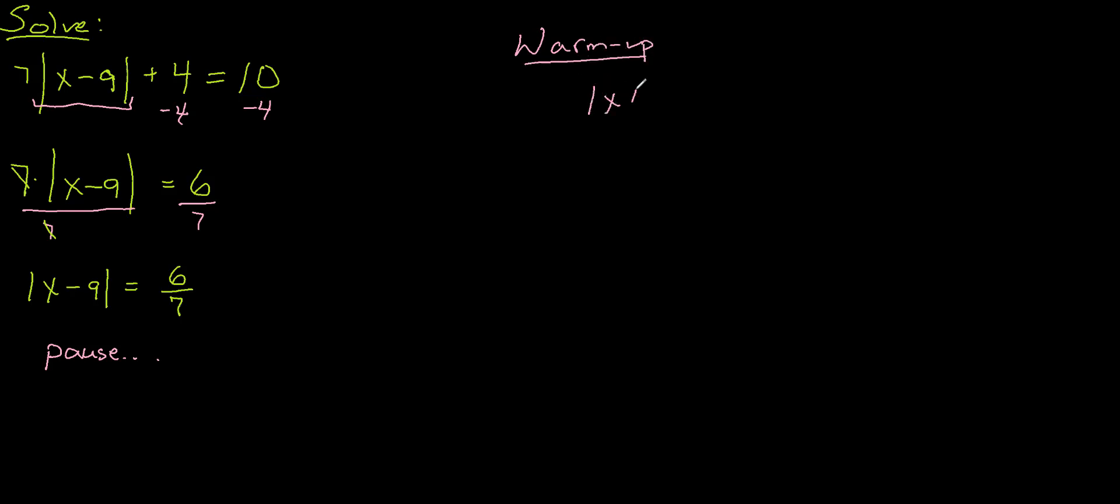Suppose I said |x| < 2. Alright, the way that you would solve that is you would say okay, well this means that x < 2 or -x < 2.